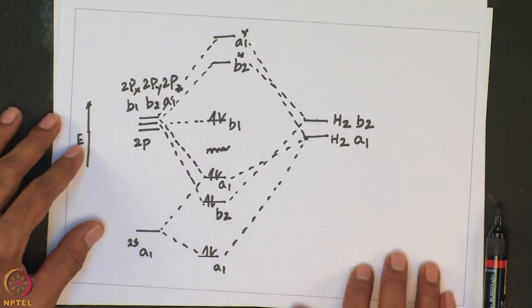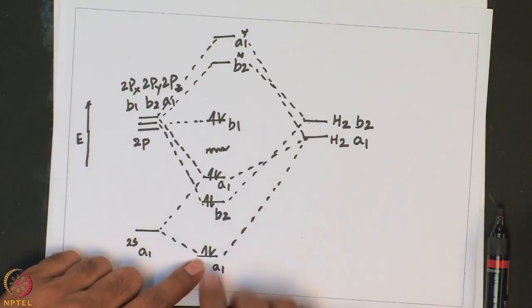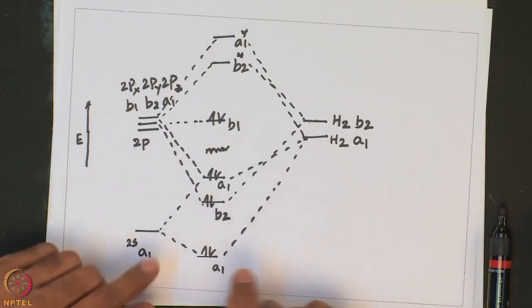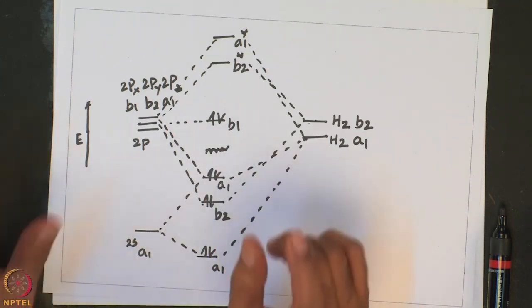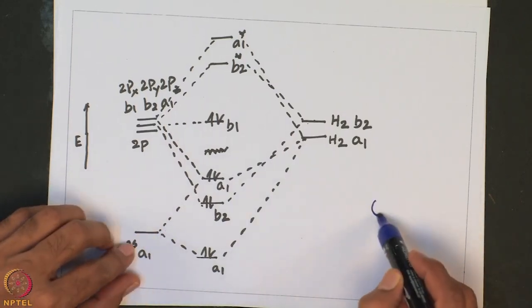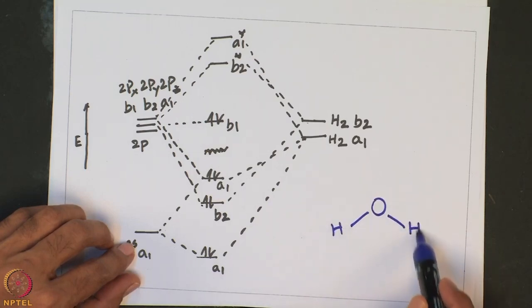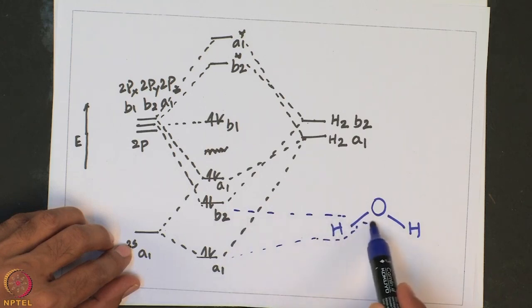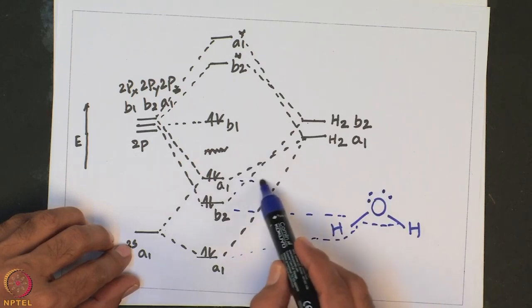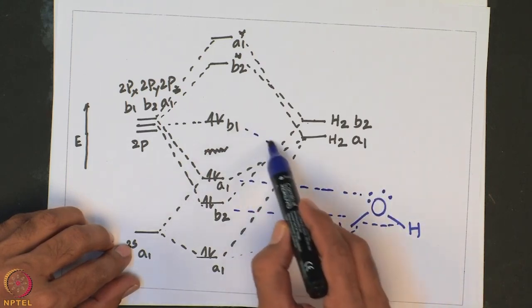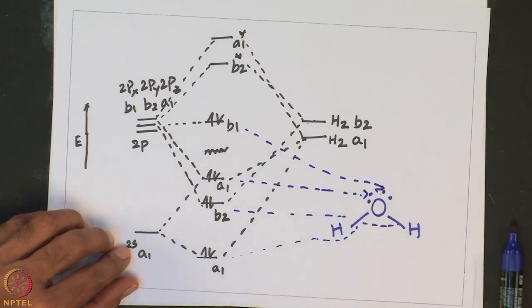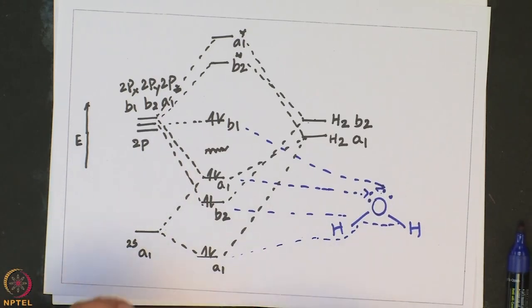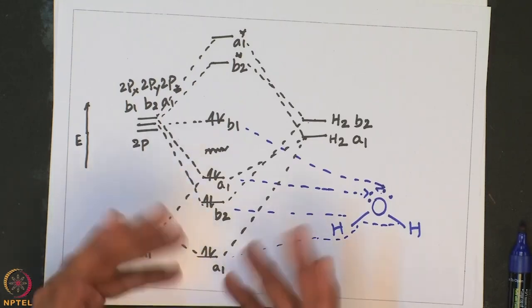Looking at this diagram: the two electrons in A₁ bonding and the two electrons in B₂ bonding represent the two O–H bonds. The two electrons in non-bonding B₁ and the two electrons in non-bonding A₁ represent the two lone pairs on the oxygen atom in water. This is how one can clearly write the MO diagram even for a triatomic molecule like water, and it can be extended to polyatomic molecules as well.